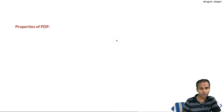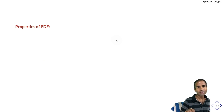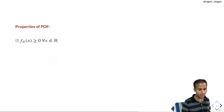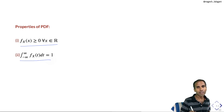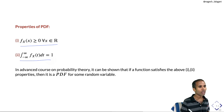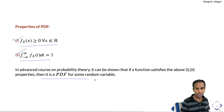Properties of PDF: there are two properties that completely characterize probability density functions of continuous random variables. First, the PDF is always a non-negative function. Second, the total area under the PDF curve equals 1. Any function satisfying these two properties will be a PDF for some random variable X.